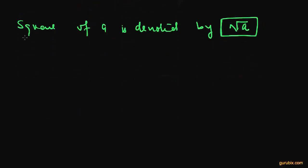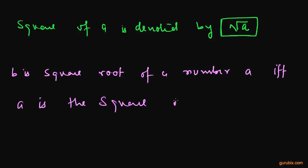Or we can say that B is a square root of a number A if and only if A is the square of B.